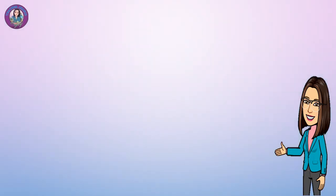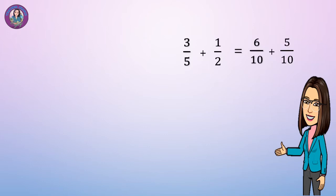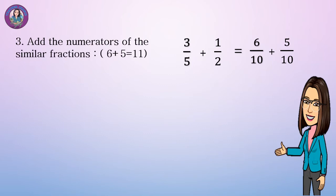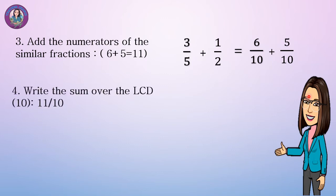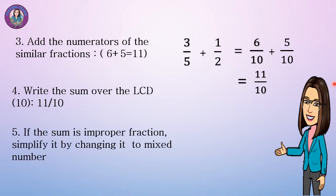Since we already changed the dissimilar fractions to similar fractions, we will do step 3: add the numerators of the similar fractions. We have 6 plus 5 equals 11. Then step 4: write the sum over the least common denominator 10, giving us 11 over 10. Step 5: if the sum is an improper fraction, simplify it by changing it to a mixed number. 11-tenths simplifies to 1 and 1-tenth.